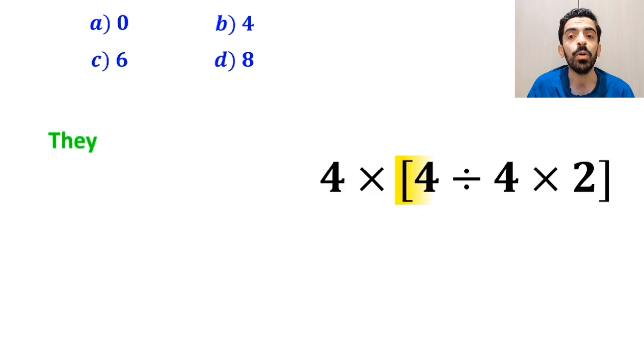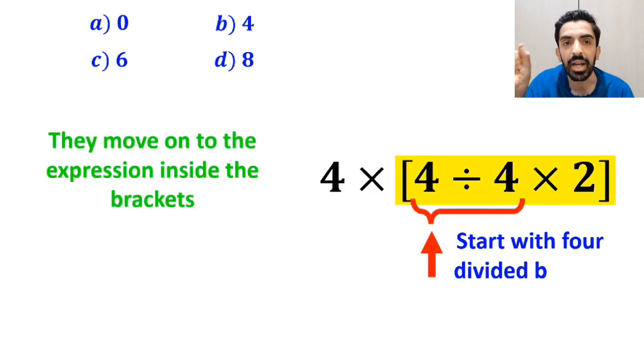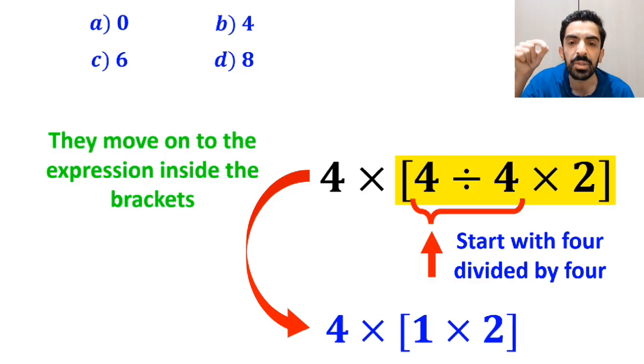In the next step, they move on to the expression inside the brackets and start with 4 divided by 4. So, this expression simplifies to 4 multiplied by 1 times 2 inside the brackets.